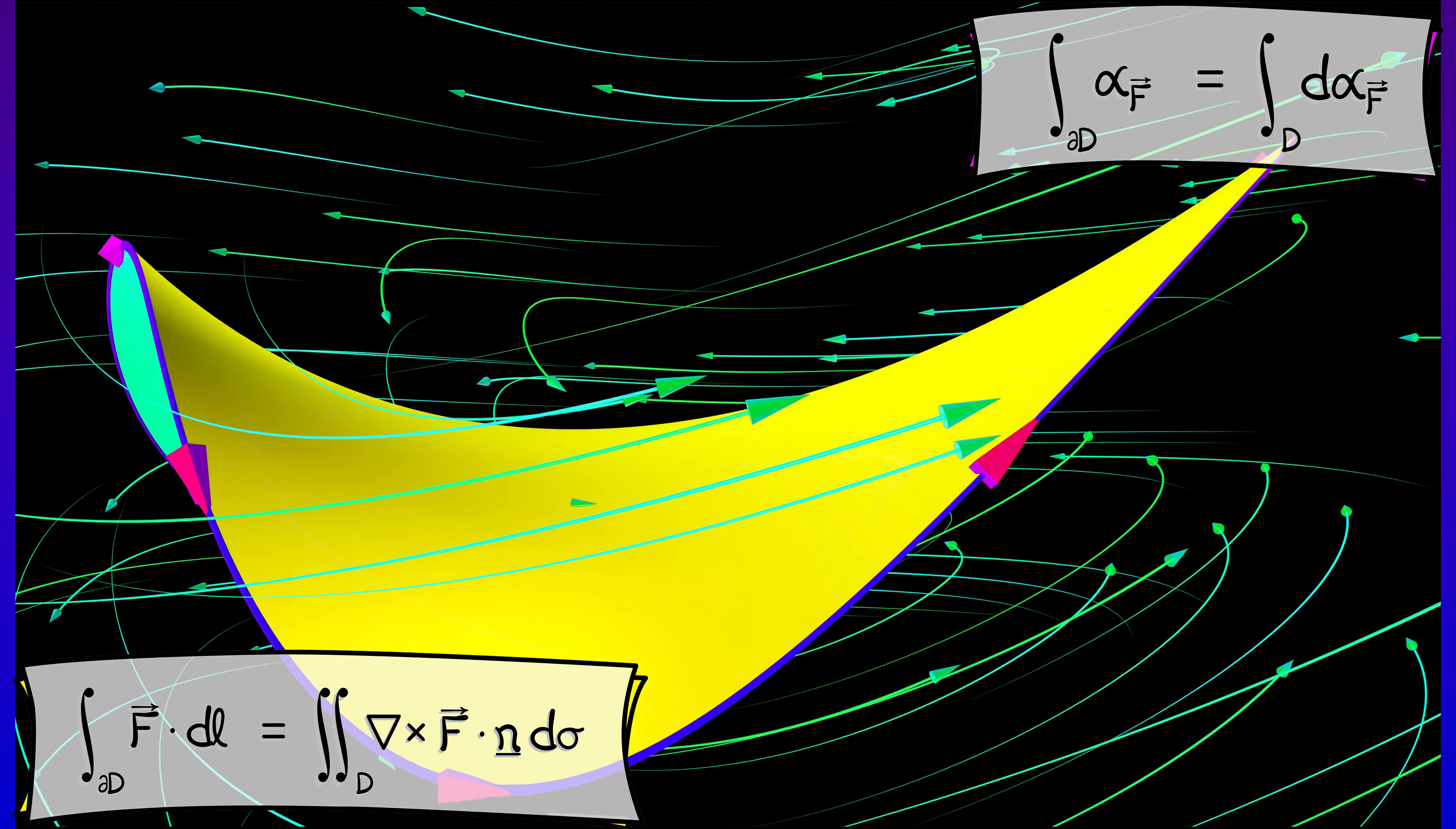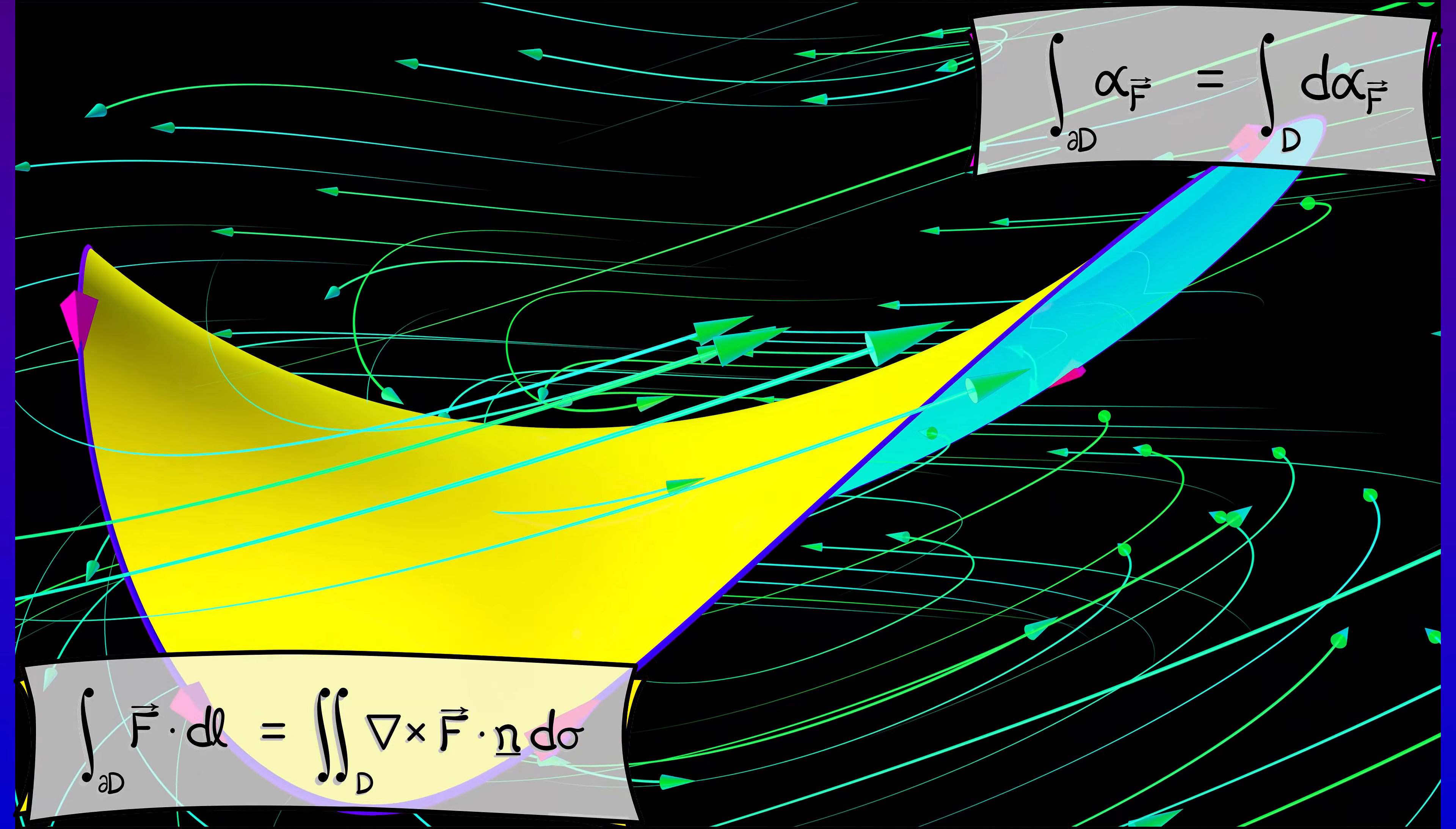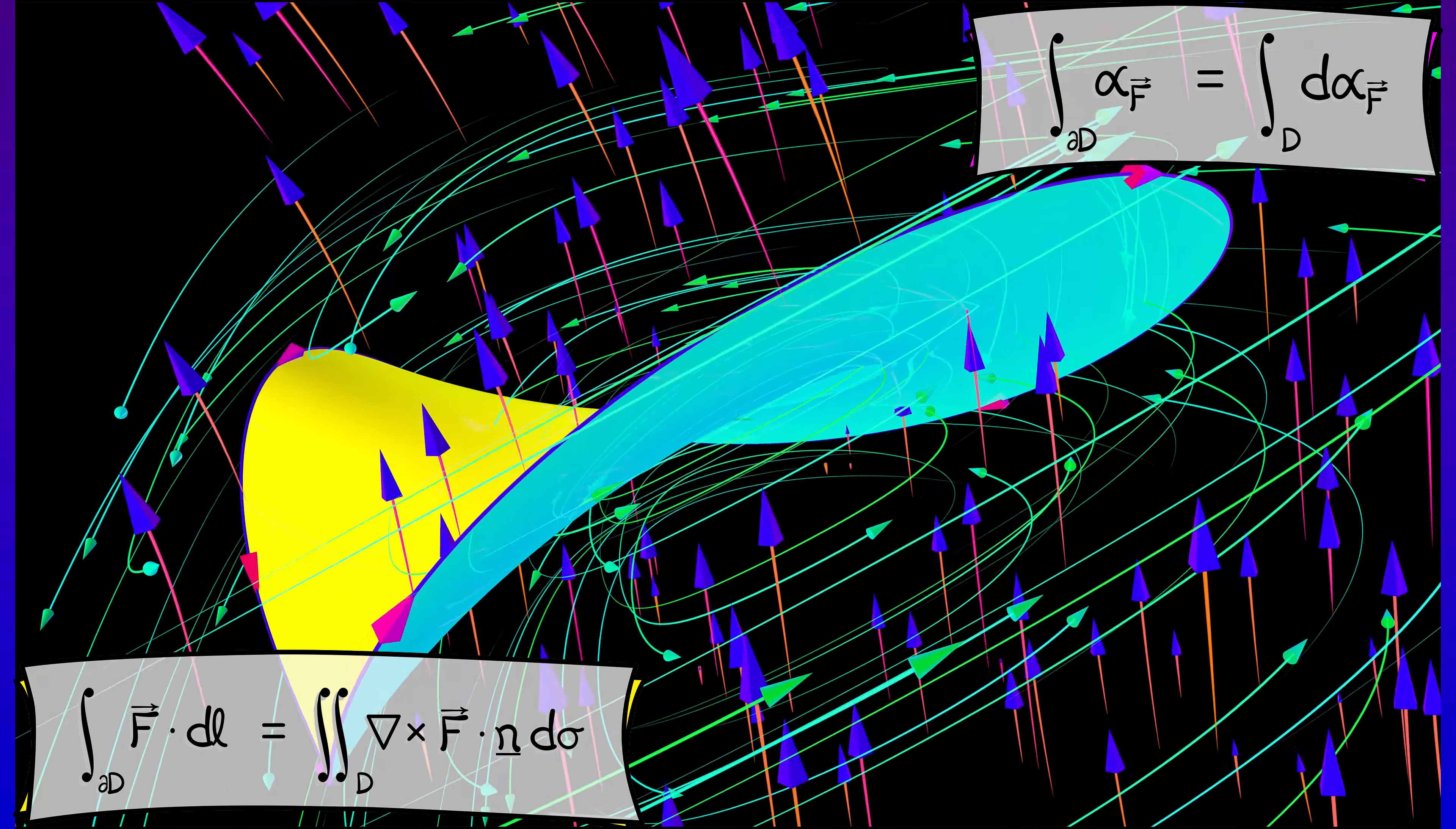If you think about how much F is doing work along the boundary, how much spin is happening there, then Stokes theorem says if you add up all of the infinitesimal curl that is piercing through the interior of this bounding surface, then these two are the same. The big idea that we see is that, from the form's perspective,